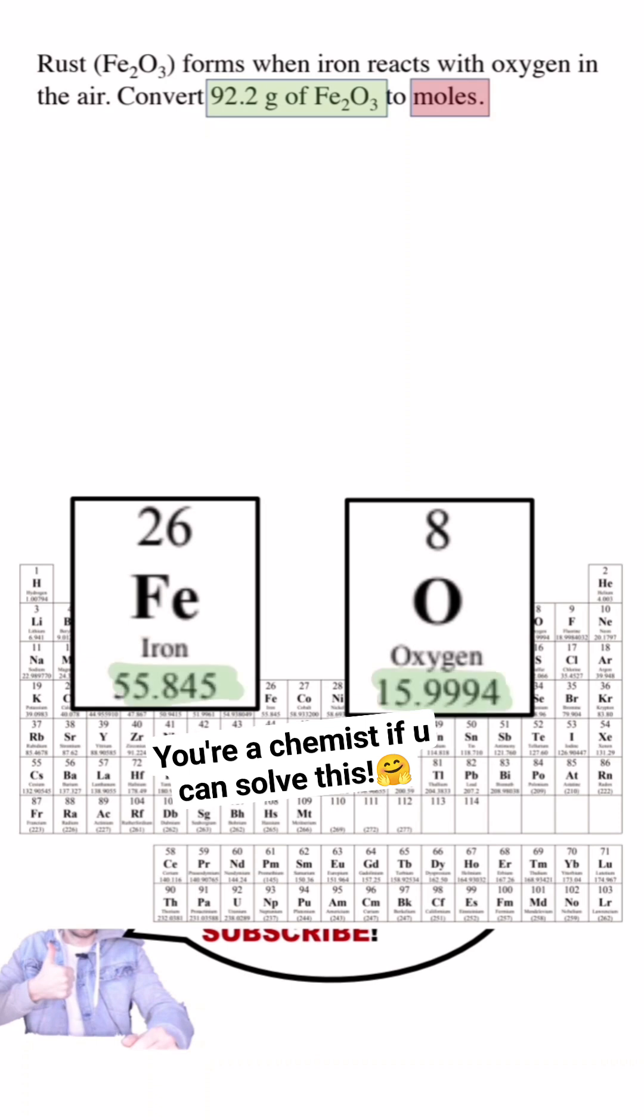To find the molar mass of this compound, we'll first find the molar mass of iron and oxygen on the periodic table. We'll add these molar masses up according to the chemical formula. There's two irons and three oxygens.